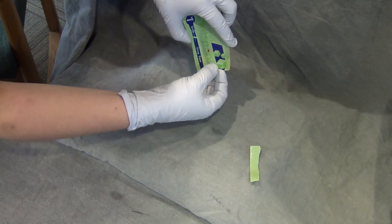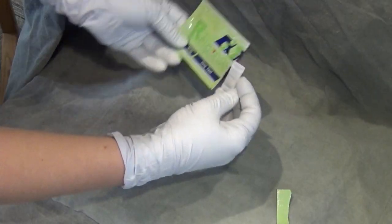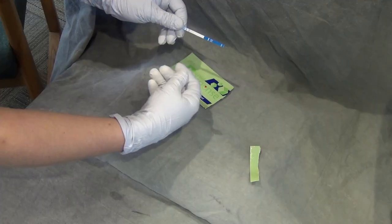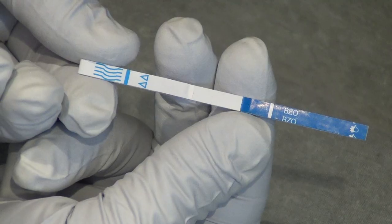Once your sample is ready for testing, you may open the package. You will see a silica gel packet that can be thrown away. You will also find a long skinny strip with two distinct halves.